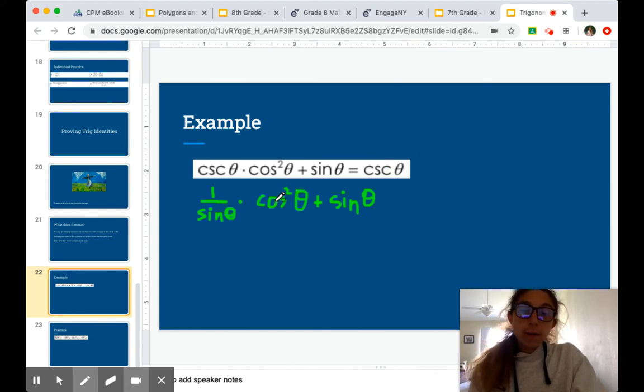So now, let's do this multiplication and rewrite that as cosine squared theta, just directly over the sine of theta.